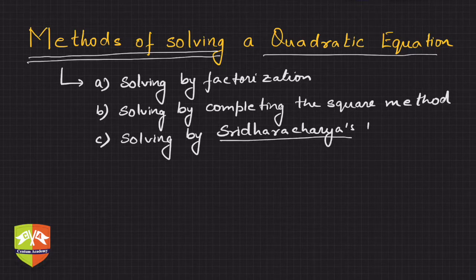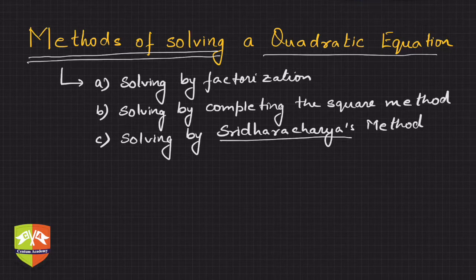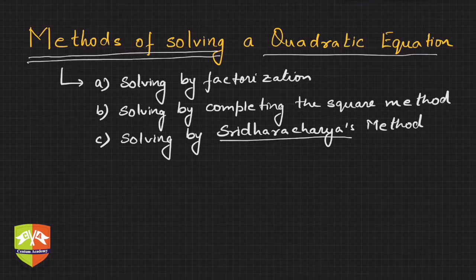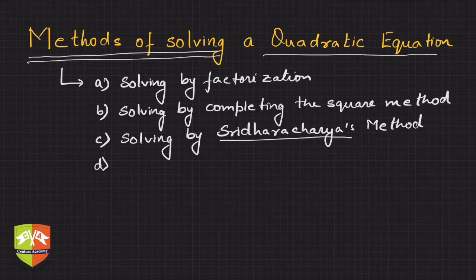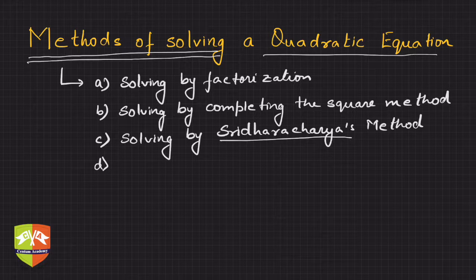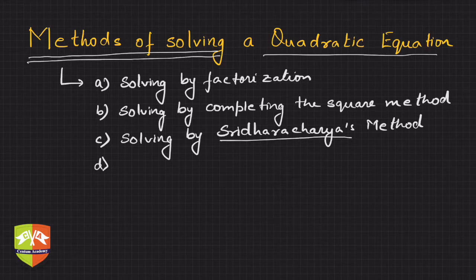The third method is solving by Sridharacharya's method. Sridharacharya was an Indian mathematician from around the 8th century AD who gave one method. He was an Indian mathematician who has given a method. And then there is one more, which is nothing but the quadratic formula.